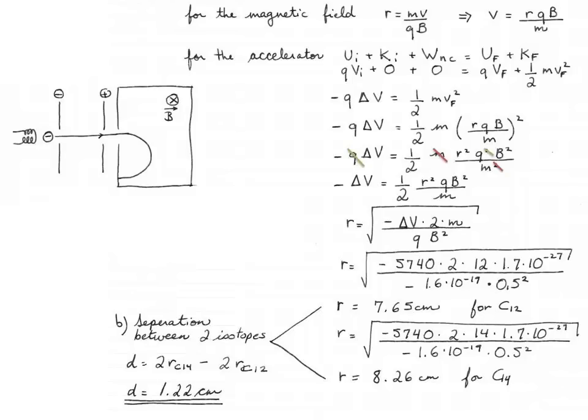This is about half the separation you will find in our other problem involving a mass spectrometer. The difference between this example and the other example — which we encourage you to watch — is that in the other example there's a velocity selector, and so the accelerating voltage is readjusted so that carbon-12 and carbon-14 ions move at the same speed when they enter the magnetic field. Here, all there is is an accelerator, and the two isotopes are accelerated through the same potential difference. Necessarily, carbon-14 is a little bit slower when it enters the magnetic field because it has a greater mass, resulting in a slightly smaller radius and therefore a smaller separation between the two isotopes.